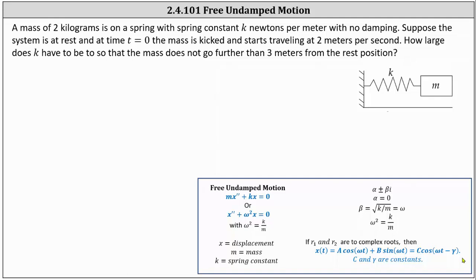Welcome to an example on free undamped motion. A mass of two kilograms is on a spring with spring constant k newtons per meter with no damping. Suppose the system is at rest and at time t equals zero the mass is kicked and starts traveling at two meters per second. How large does k have to be so that the mass does not go further than three meters from the rest position?